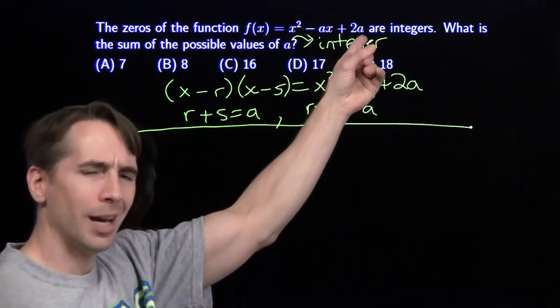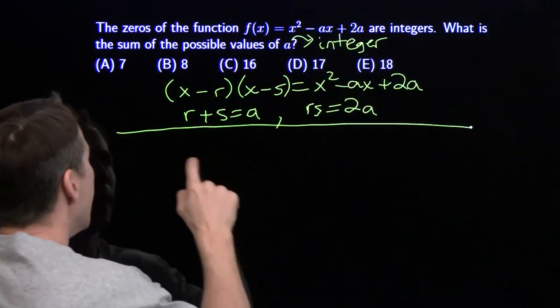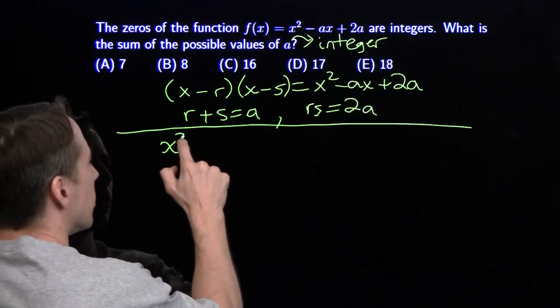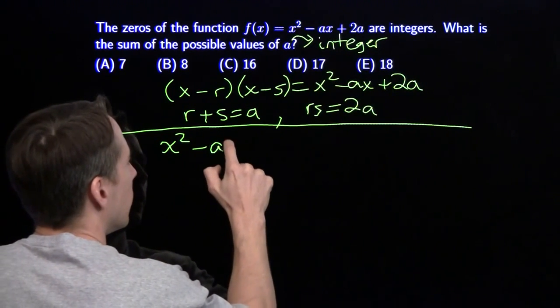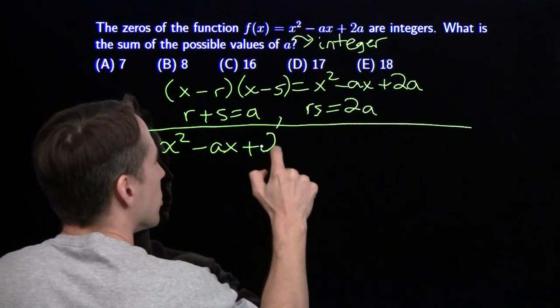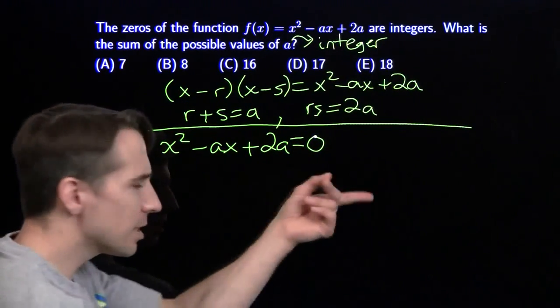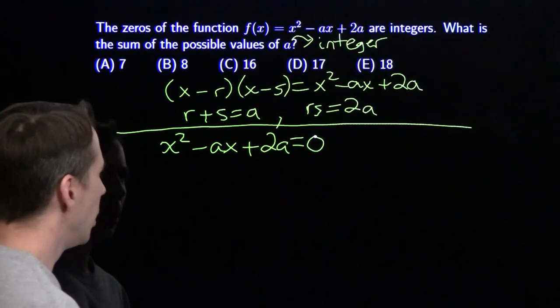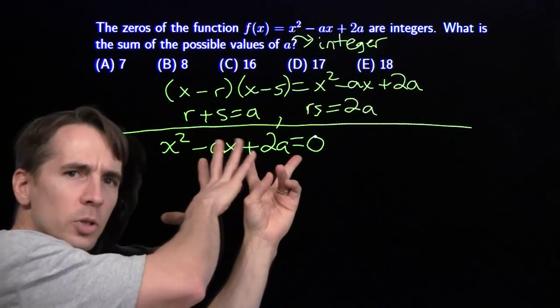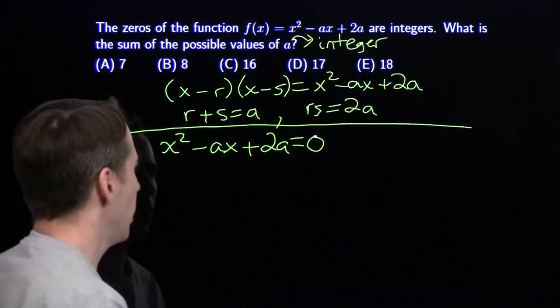It just has two variables and has the a I care a lot about. We know the zeros are integers, so what I'm going to do is solve for a in this equation.